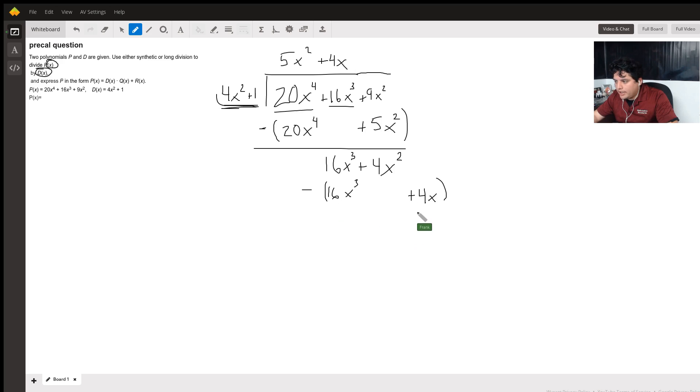And I'm going to end up with minus 4x. However, since I didn't subtract anything from the 4x squared, I'm still going to bring that 4x squared down.